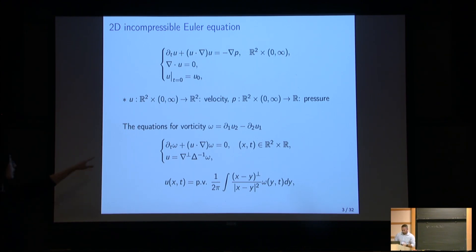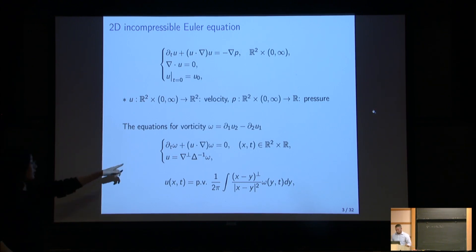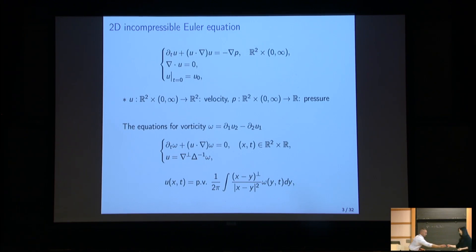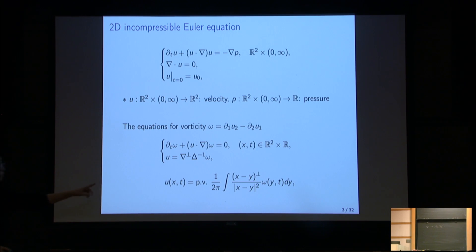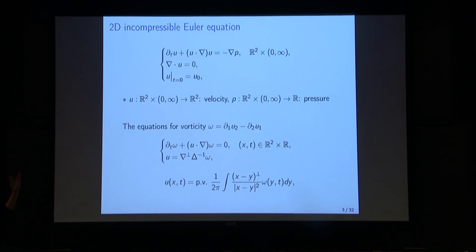The equation is a transport equation and the drift velocity can be written in terms of vorticity. Using the explicit formula of the inverse Laplacian, we can relate the velocity with vorticity through the explicit integral form — we call this the Biot-Savart law. Since we can always recover the velocity from vorticity, these two equations are equivalent.